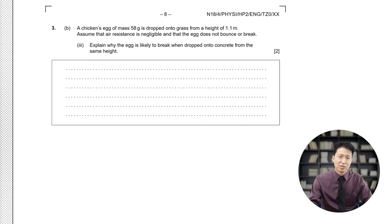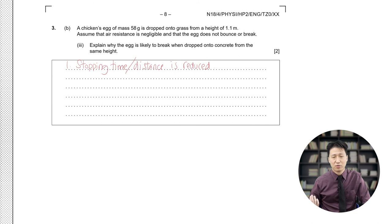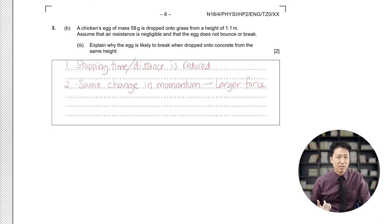The last part asks us to explain why the egg is likely to break when dropped onto concrete from the same height. Well, you should realize that what actually breaks the egg is a force. A larger force is required to break the egg. So, what happens is, first, either the stopping time or the stopping distance is reduced. Next, the change in momentum is the same, but the stopping time is reduced. This means that the force is larger and this will break the egg.